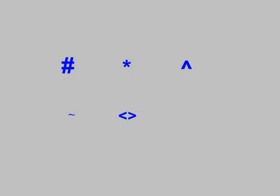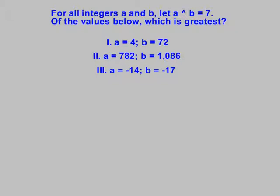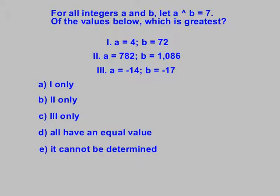Let's look at one. This made-up function gives us, for all integers a and b, let a arrow up b = 7. Of the values below, which is greatest? Then we're given the choices. For number 1, a = 4, b = 72. Number 2, a = 782, b = 1,086. And 3, a = -14, b = -17. Then we have our answer choices to choose from.